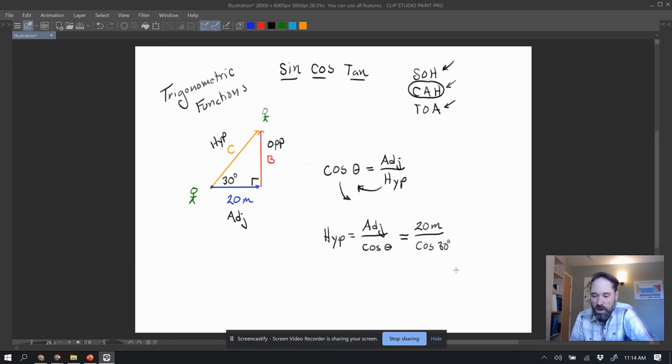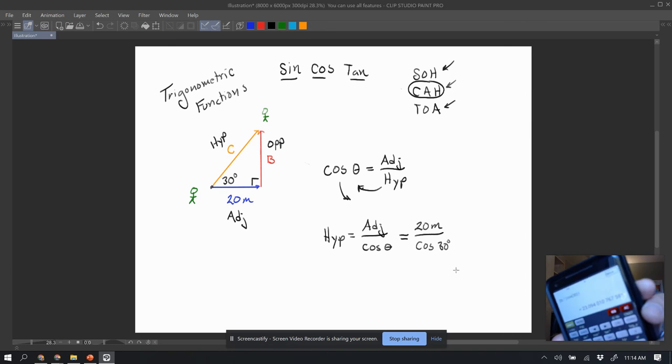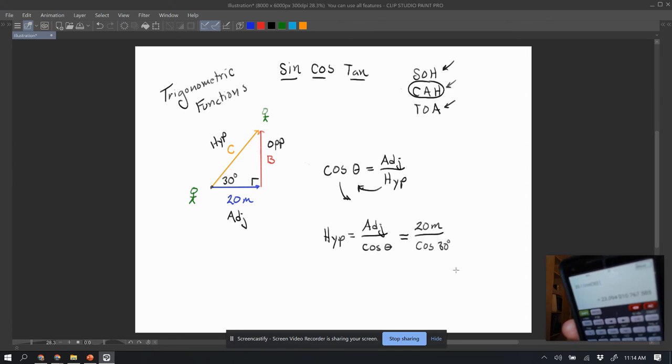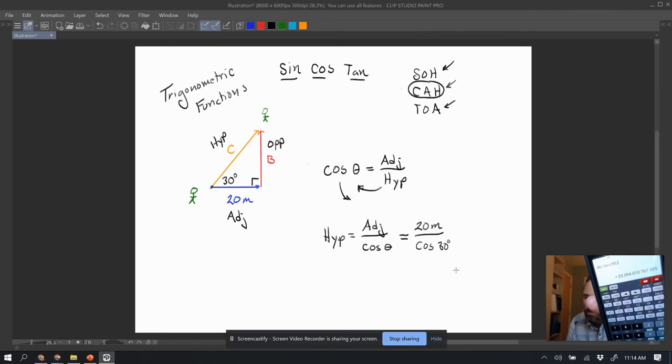So again, that's 20 divided by the cosine of 30. And what I walk away with, I'll see if I can get this to focus on it. Oh, there it is.